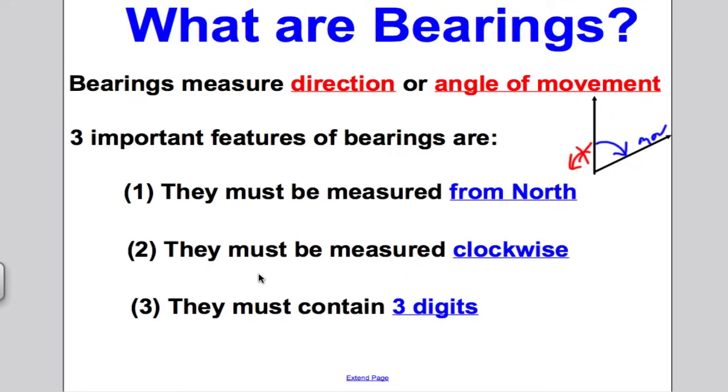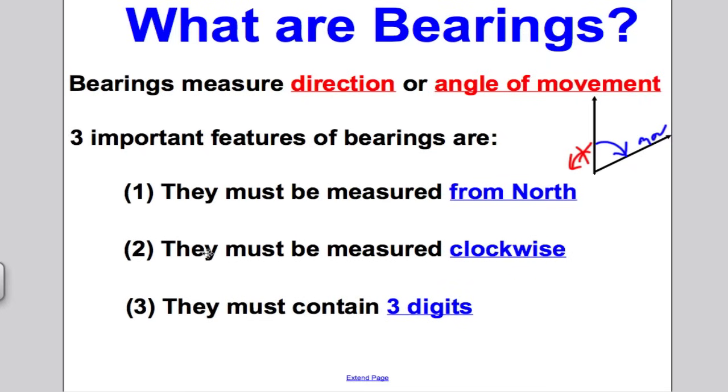The third thing is that they must contain three digits. You must write your angles with three digits. Now, if your bearing is 320 degrees, well, you're done. But if your angle is something like 40, then you should write it as 040, for example. And that's the basics of bearings. Let's go straight on to measuring bearings.